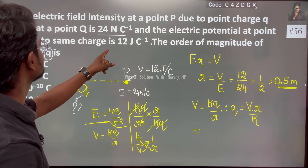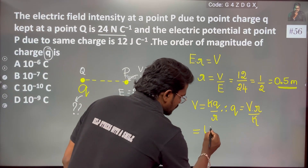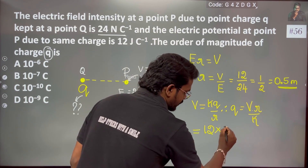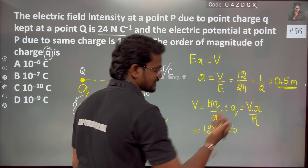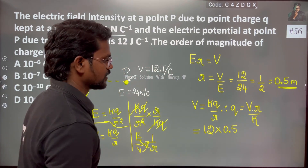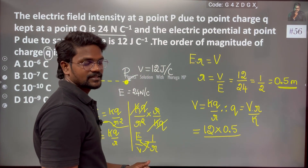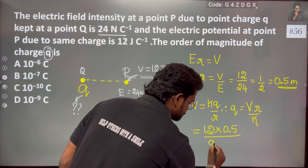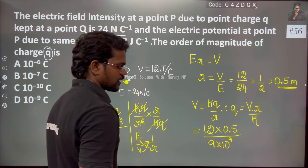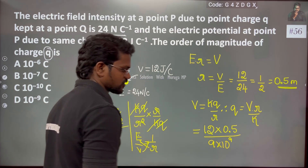The potential we just found is 12. R is 0.5 — that is the distance. So Q equals 12 times 0.5 divided by K. K is 9 into 10 to the power 9. Normal cancellation gives us 10 to the power minus 10. Simple calculations follow.